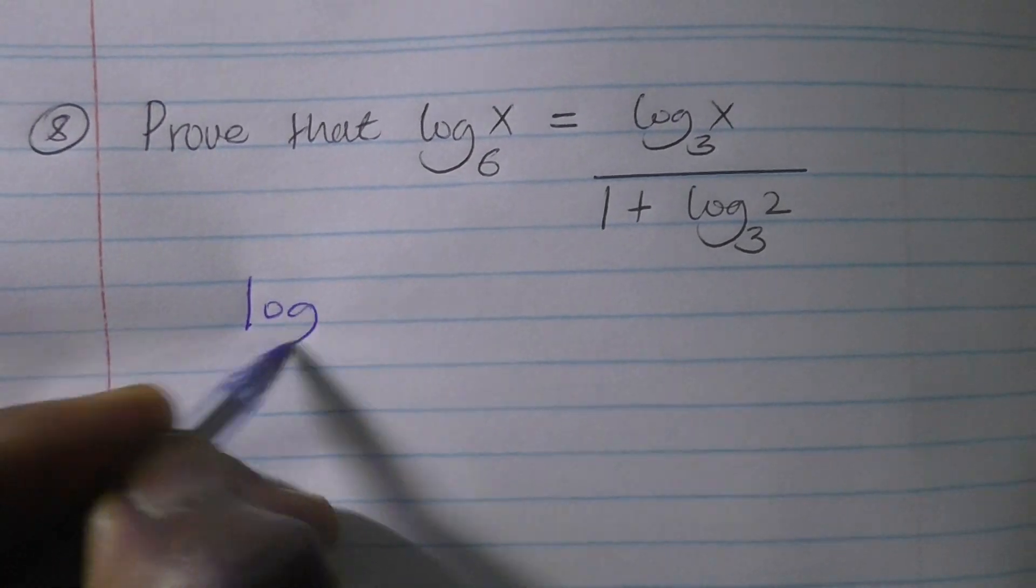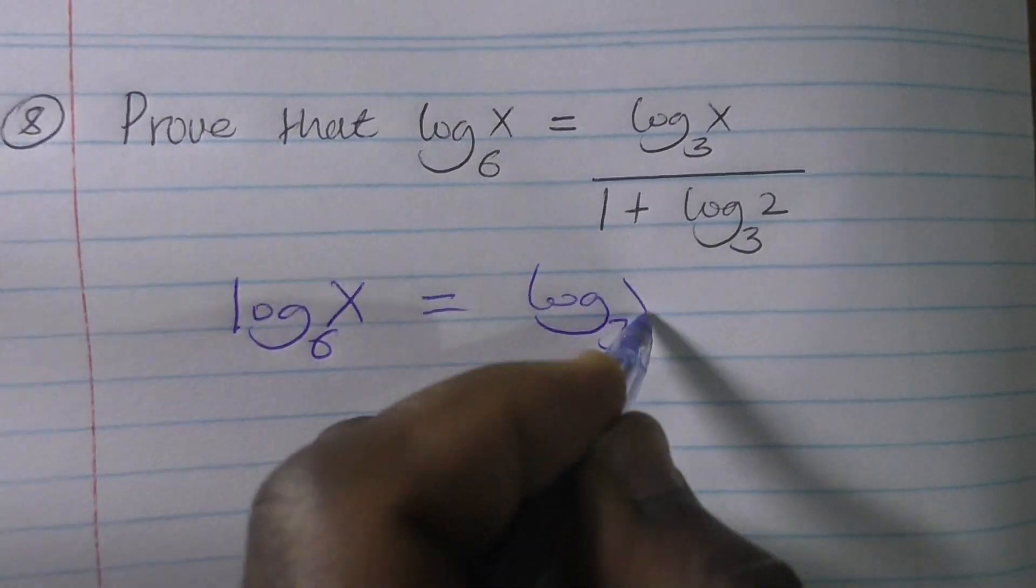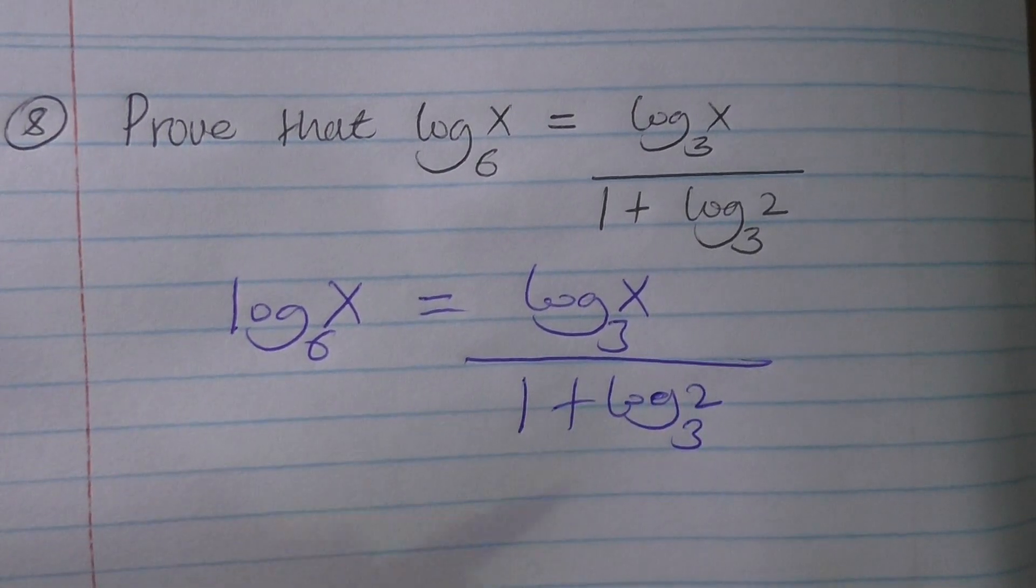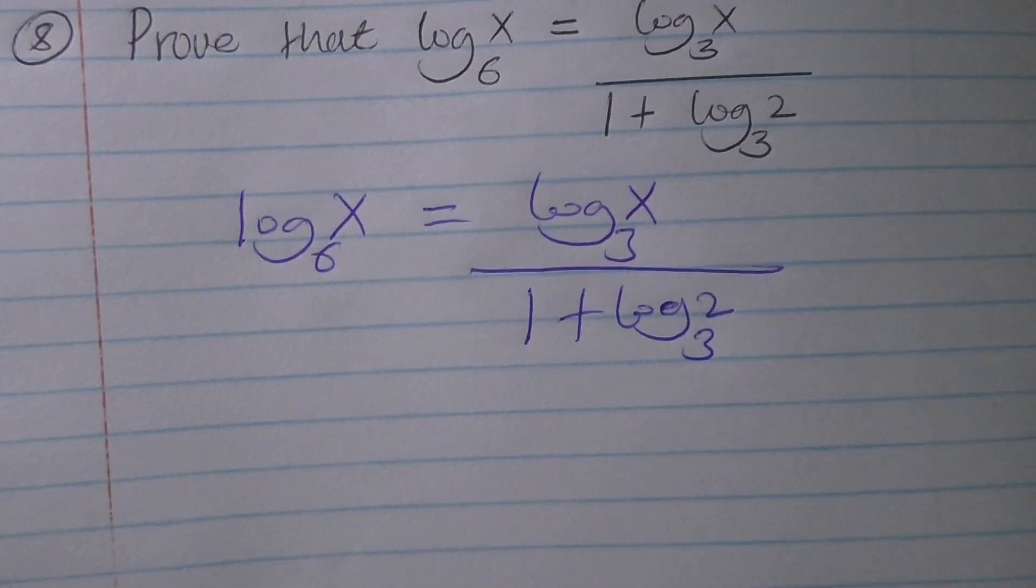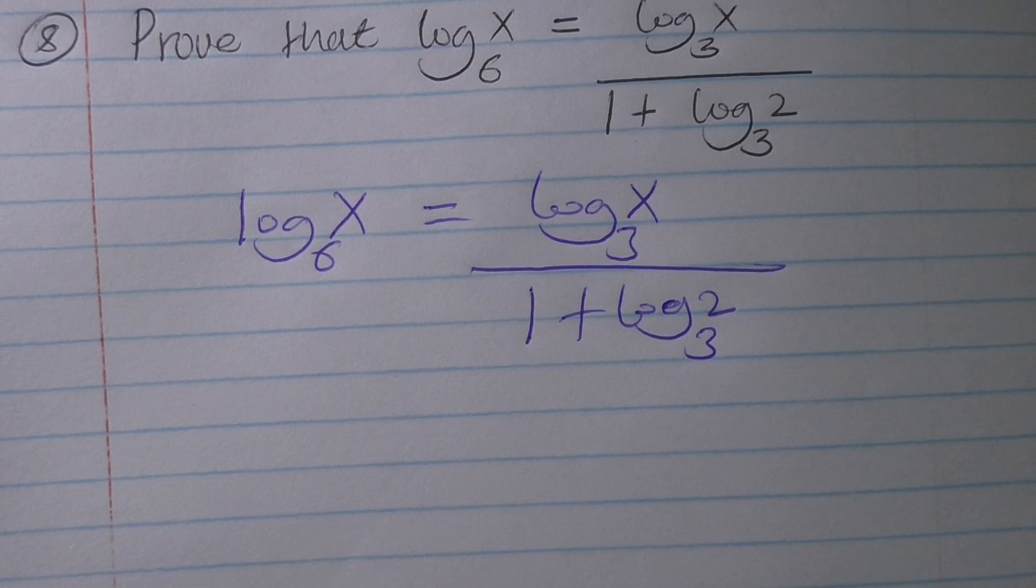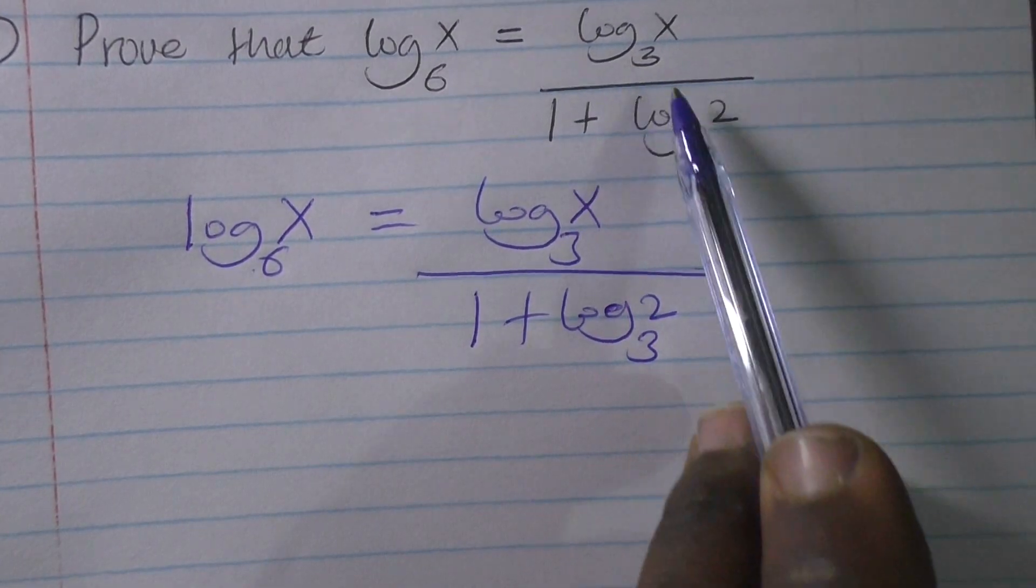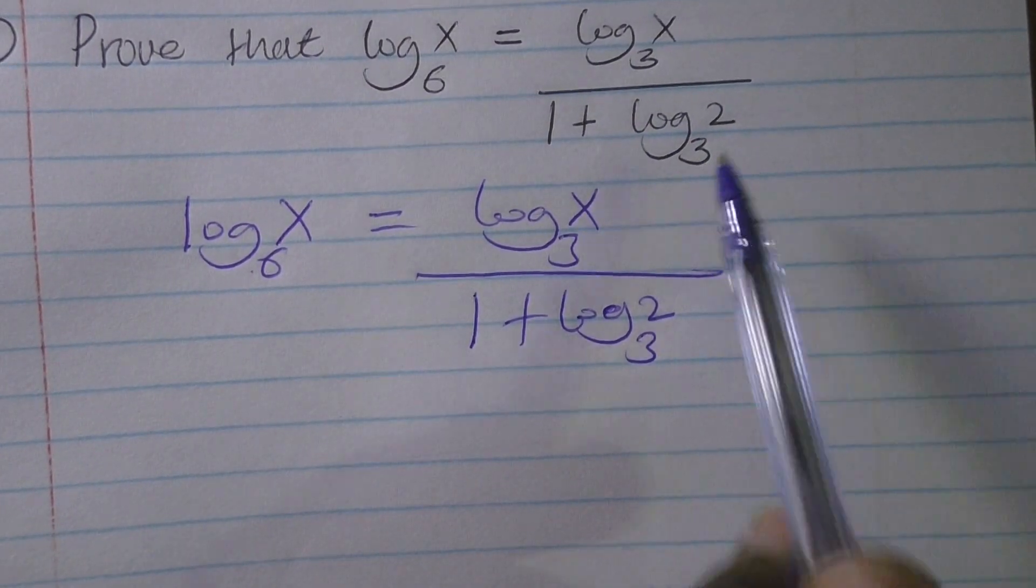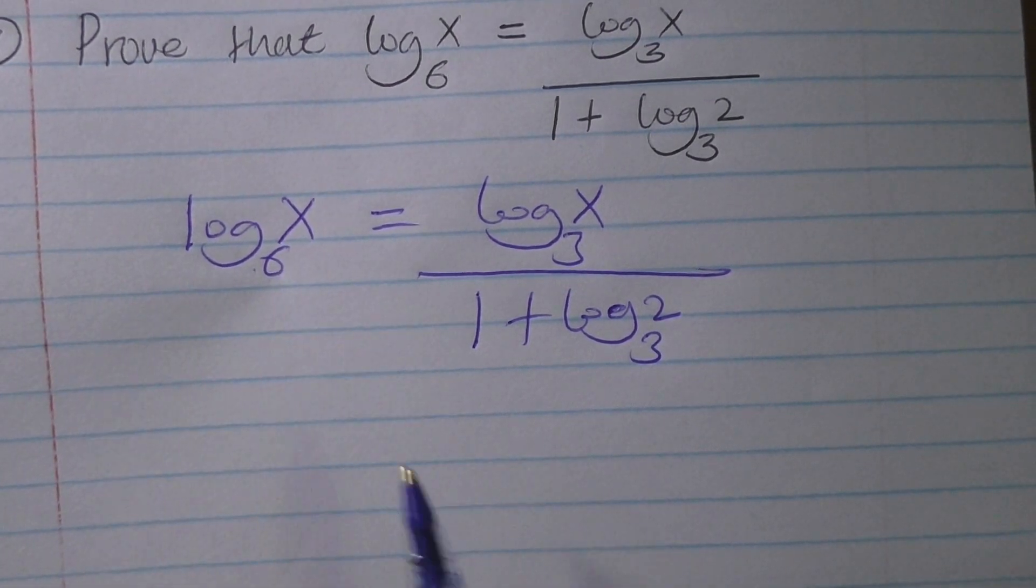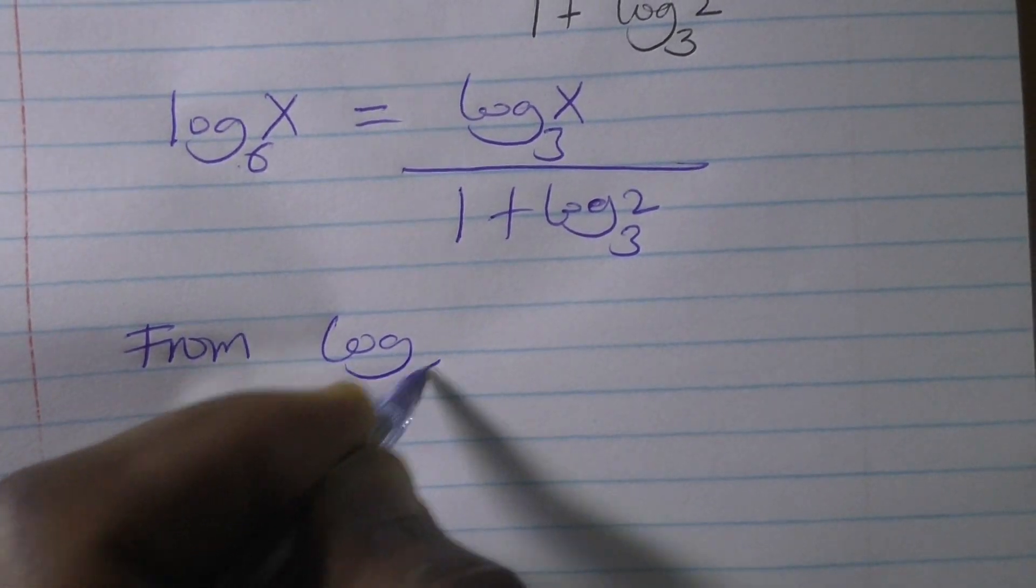So we prove. We can start from either side. I would prefer to start from here. You look at our expression has log base 3, so meaning we are going to introduce log base 3. That is to say, from log base 6 of x, introduce log base 3.